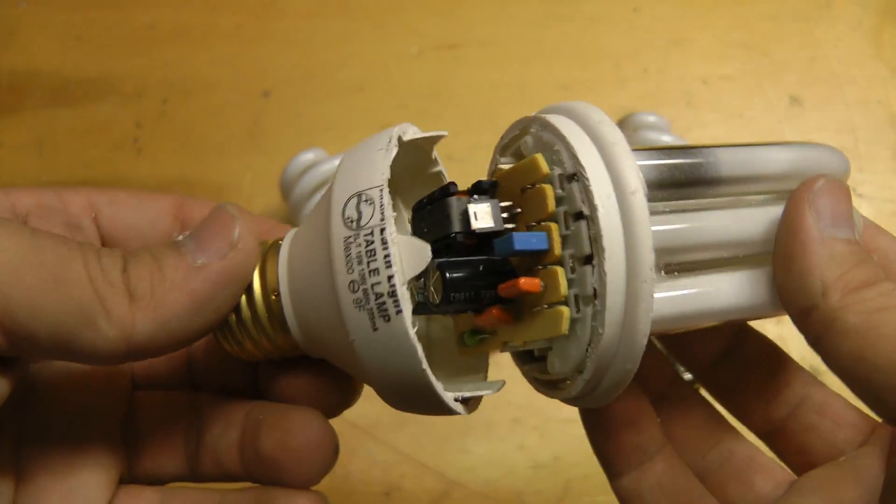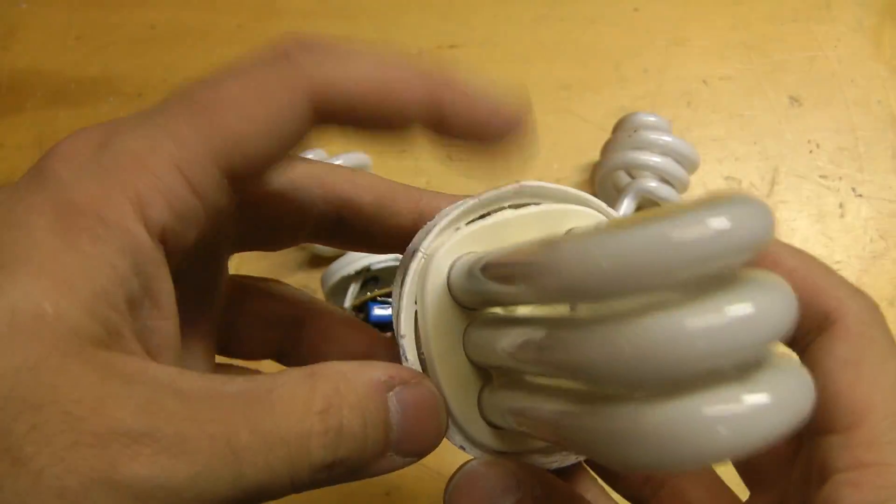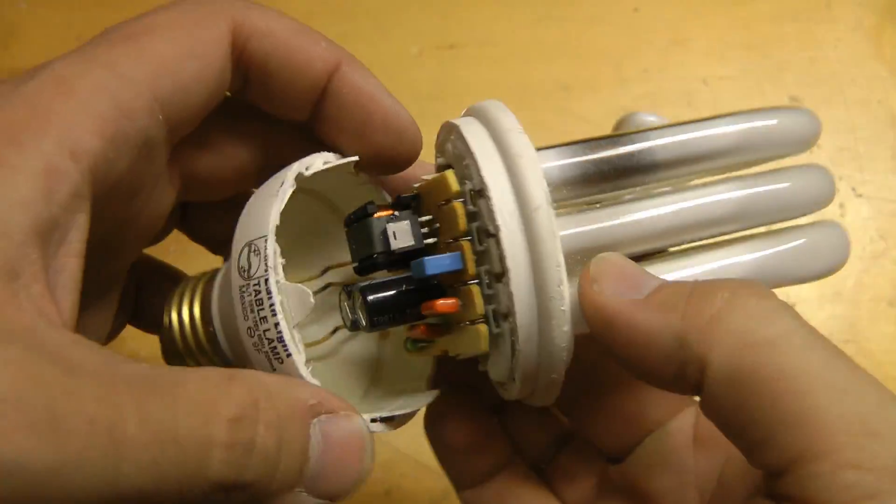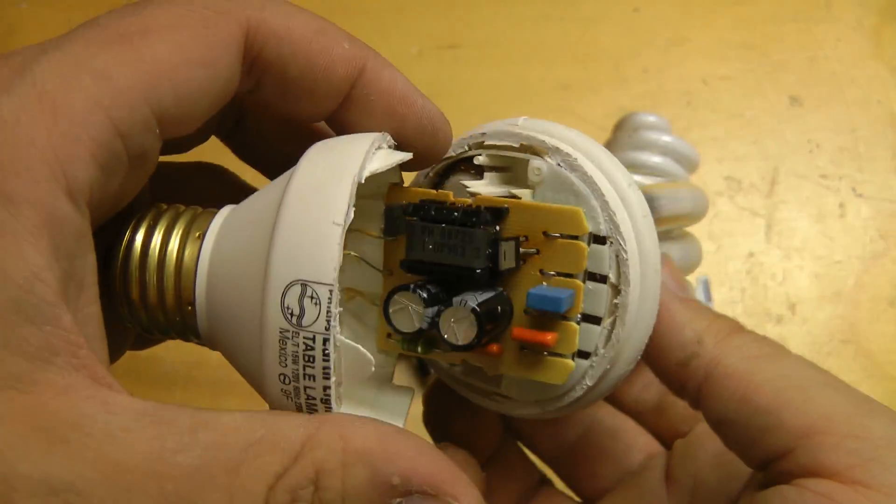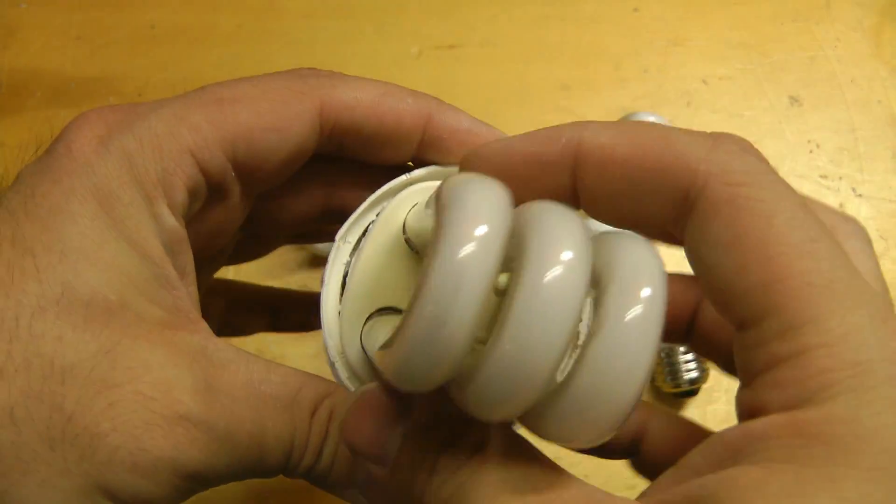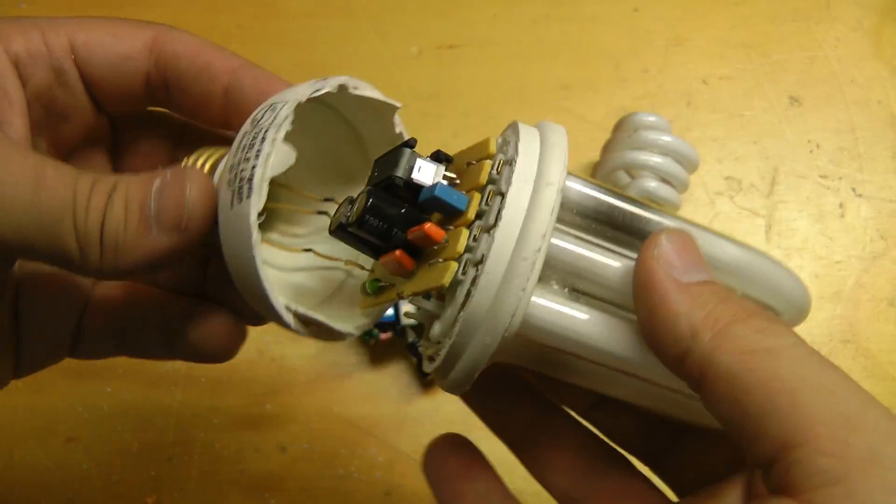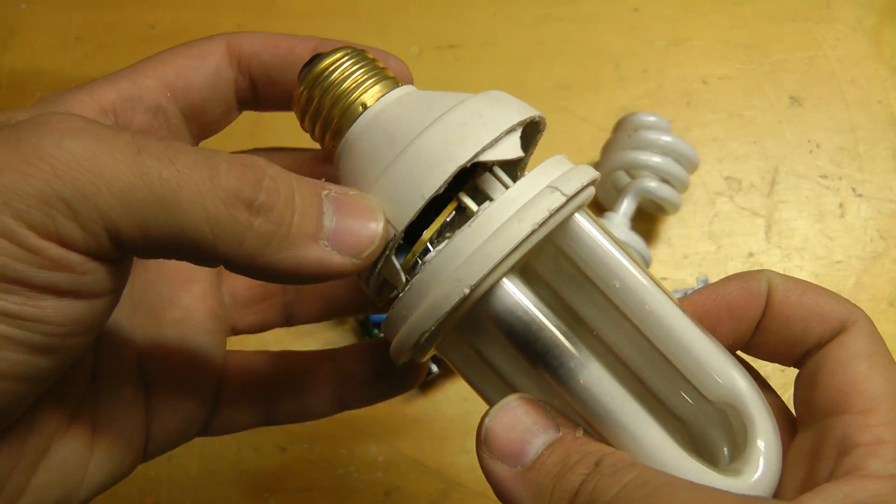One thing that puzzles me about this lamp is why they didn't make the actual base part rectangular or square because the driver board is rectangular and so is effectively the base profile of the tube. It could have made the base somewhat smaller.